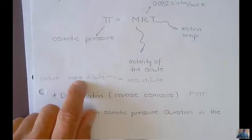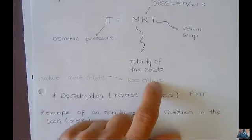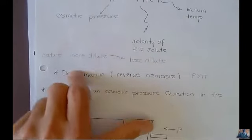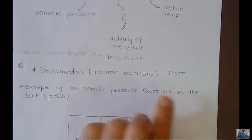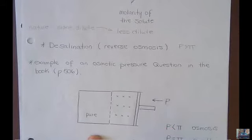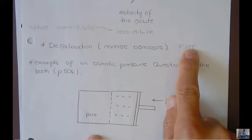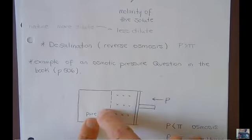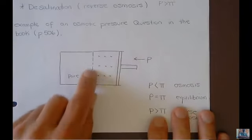What does nature do? Nature is more interested in going from the more dilute to less dilute. More dilute means more pure. Desalinization is reverse osmosis. If the external pressure that I push on with my syringe is greater than the osmotic pressure, then I can push it in the other direction. So this would be an example. Here's my membrane setup. If P, the external pressure, is less than the osmotic pressure, then I'm going to have osmosis.